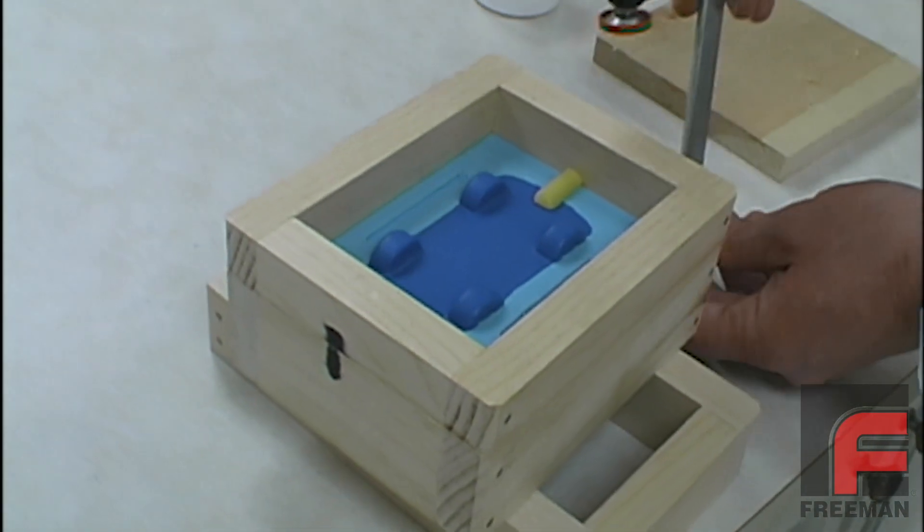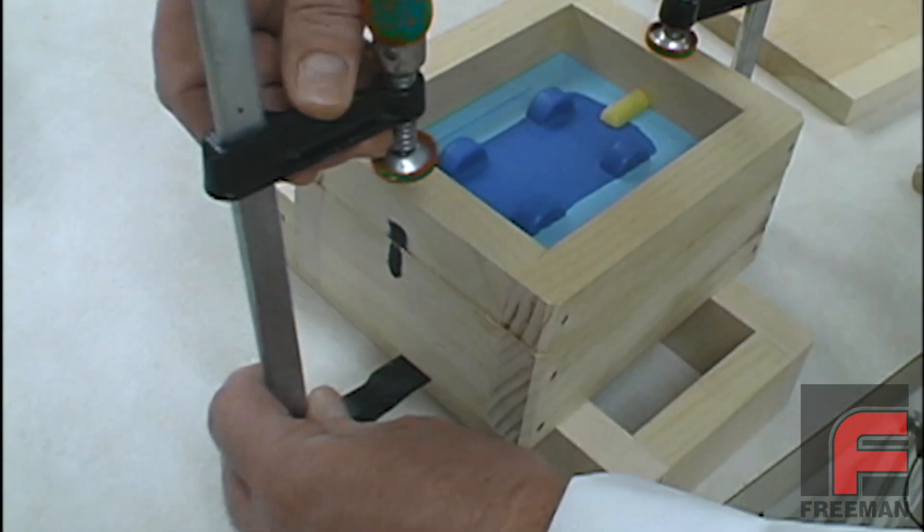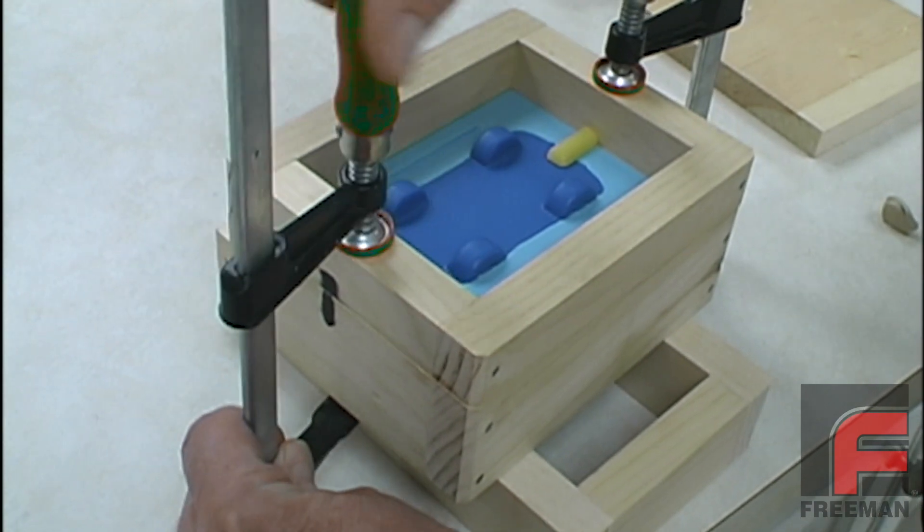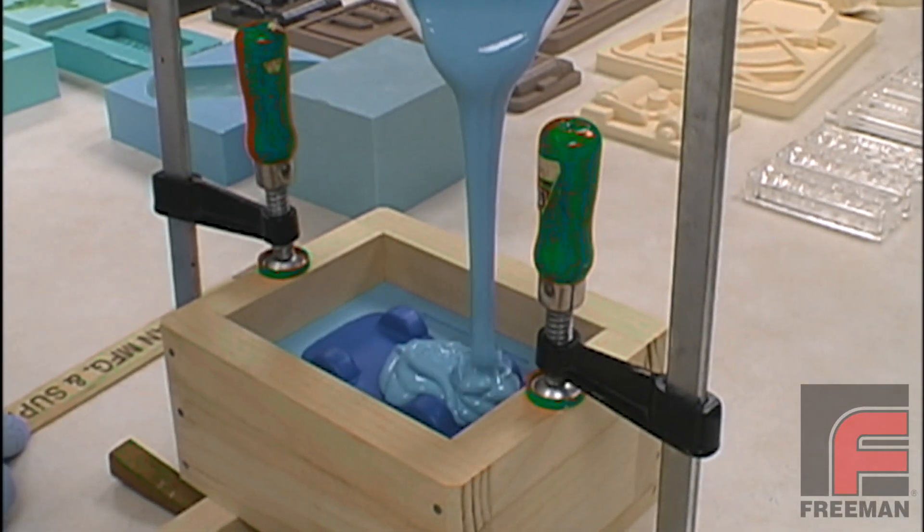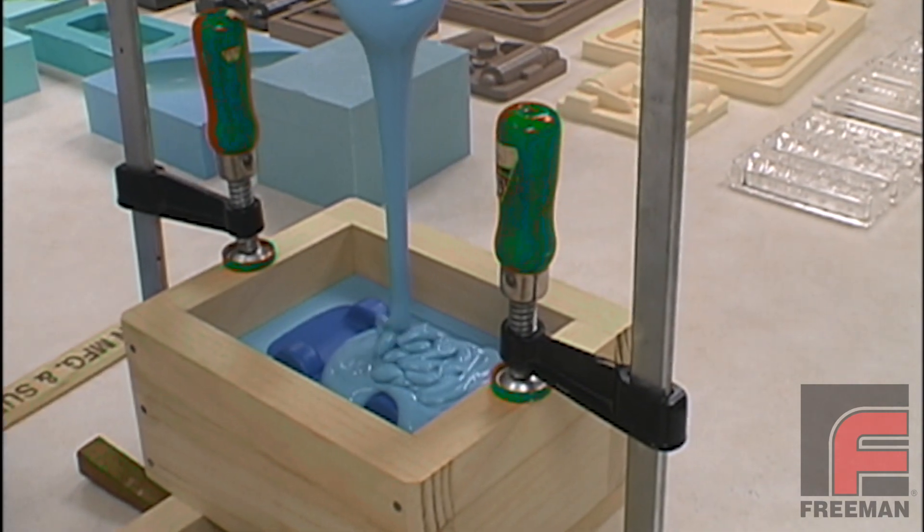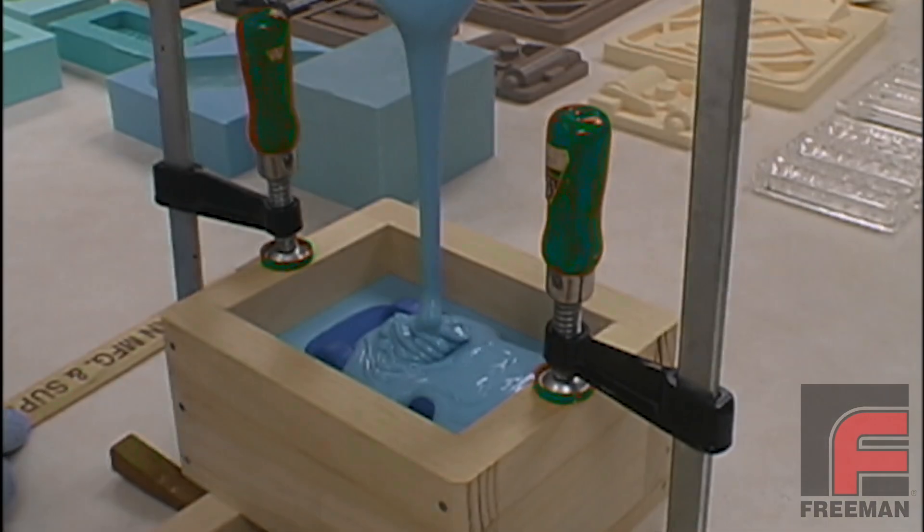Next, we place the other half of our mold frame on top and clamp it down. Now we are ready to pour the second half of our mold. Once again, our V340 has been weighed, mixed, and degassed, and we flow the material into the mold as before.